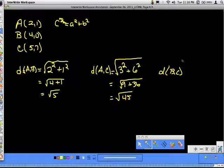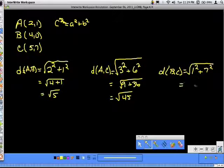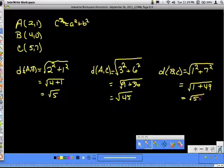So let's do our last side, B to C. If we look at B to C, X's from 4 to 5, have a change of 1, square that. Y's, 0 to 7, that's a difference of 7, square that. Find your square root. So 1 squared, obviously, is 1. 7 squared, 49. Find the square root of that and I get the square root of 50.